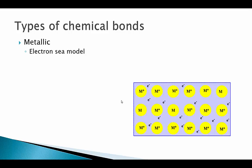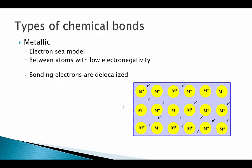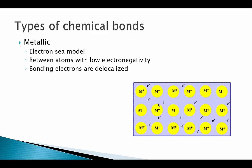There are some important things to notice about this model. First, this can only happen between atoms with low electronegativity — you need atoms that are willing to let go and release their electrons fairly easily. Also, these bonding electrons are what we call delocalized. The electrons that are the glue holding this structure together don't have to be in any particular location; they are free to move around in any orientation. We say that they are delocalized.